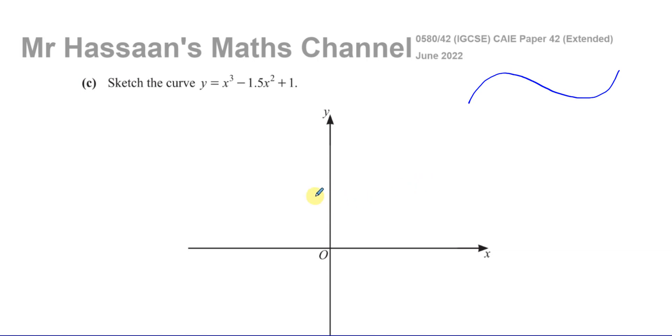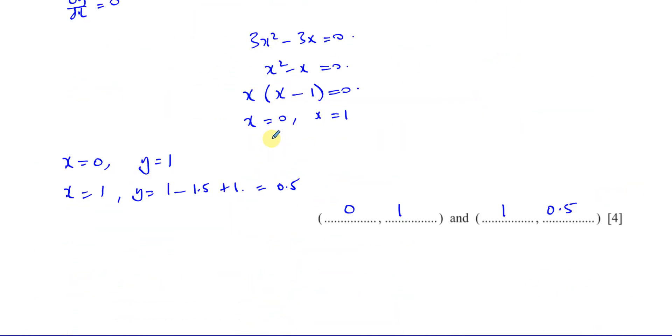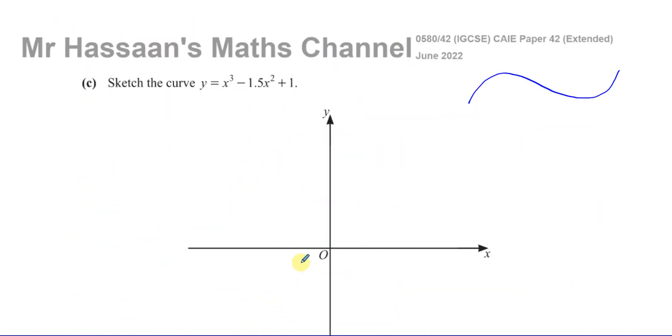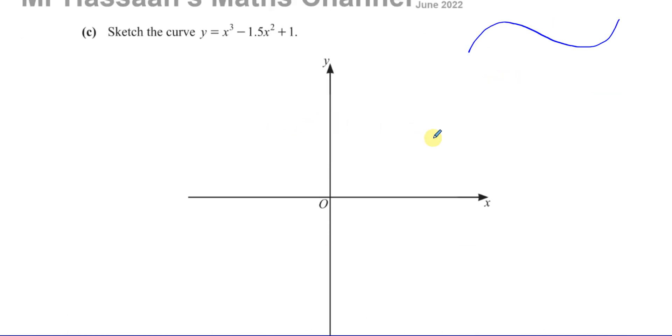Now we know that that same place where it crosses the y-axis is going to be the turning point. And the other point we found was 1 and 0.5. Now, this is worth two marks only. We cannot really find where it crosses the x-axis because we're not able to solve this equation. Normally, you'd find where it crosses the x-axis. We know it crosses the y-axis at 1.